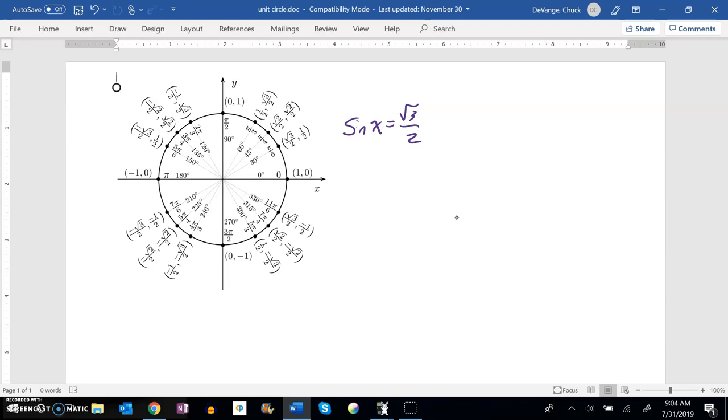So sine is height. Where does that happen? That happens here and here. So this would be pi over three and two pi over three.